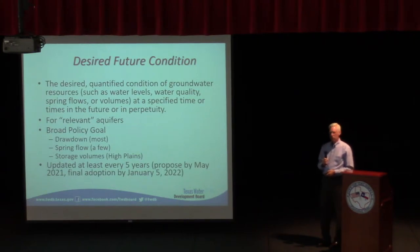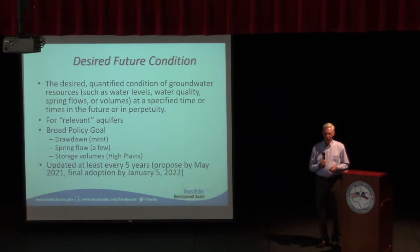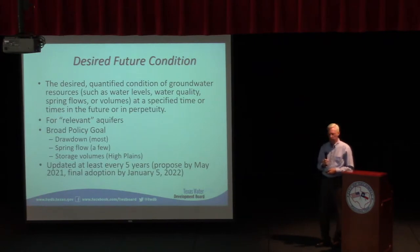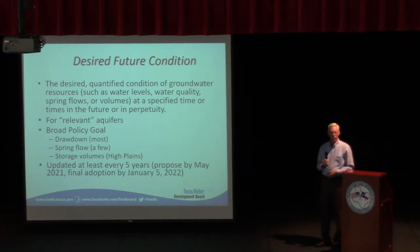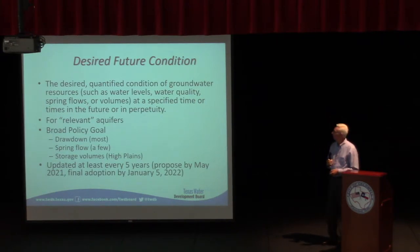These desired future conditions are dynamic. Once they're set, they're not set in stone. There's a mandatory review process — the legislature has adjusted the dates slightly, and as changed this past session, the next proposal for desired future conditions will be due in May 2021, with final adoption in January 2022. It's basically been a five-year process. We have just completed the second of the five-year cycles, so for most areas we're on the second generation of desired future conditions.